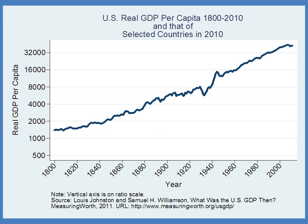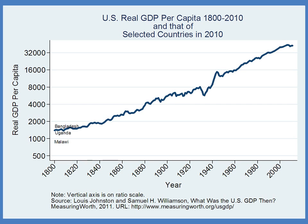We can also use this graph to get an intuitive sense of the differences in wealth between different countries. Now I've superimposed the GDP per capita of some other countries in 2010. Down here is Bangladesh, Uganda, and Malawi. Bangladesh and Uganda are about as rich today as the United States was in 1800. Malawi is actually a little bit poorer.